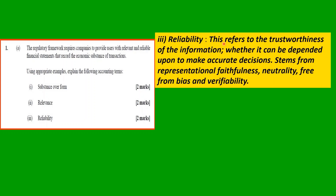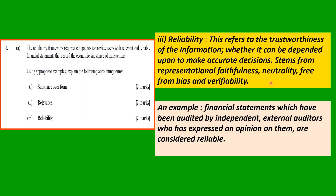Reliability refers to the trustworthiness of the information — whether it can be depended upon to make accurate decisions. It stems from representational faithfulness, neutrality, freedom from bias, and verifiability. An example: financial statements which have been audited by independent external auditors who have expressed an opinion on them are considered reliable.